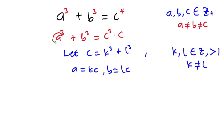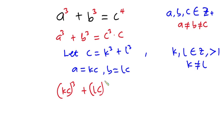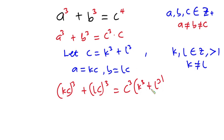Wherever I see a in this equation I'm going to put kc, and wherever I see b I'm going to put lc. So this equation becomes kc to the third power plus lc to the third power is equal to c to the third power times — and since c is k to the third power plus l to the third power, we have k to the third power plus l to the third power here.